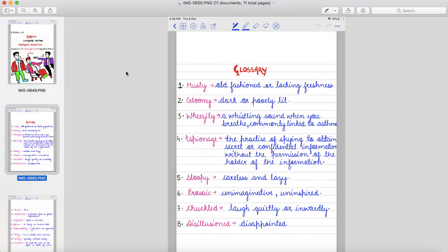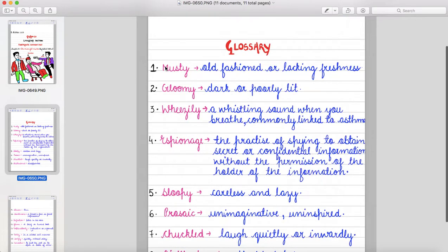Students, here I am providing you the meanings of the difficult words from the chapter, The Midnight Visitor. So whenever you read the chapter, you can get the help from the glossary page to understand the chapter in a clear way. So the first is musty, that means old-fashioned or lacking freshness. Second, gloomy, dark or poorly lit.